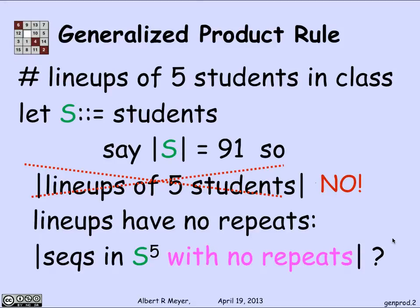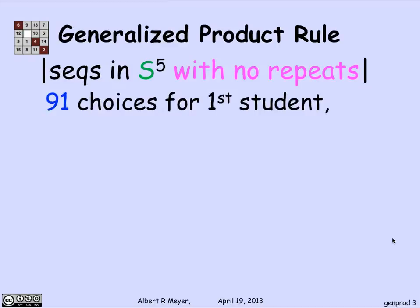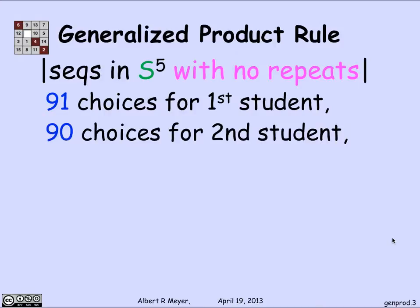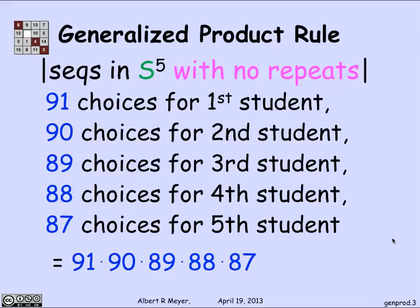And the generalized product rule tells you quite straightforwardly how to count those. Namely, there are 91 ways to choose the first student among the 91. And whichever first student you've chosen, that leaves 90 other students that you could choose to be second. And once you've chosen the first two, that leaves 89 students you could choose for the third, and 88 for the fourth, and 87 for the fifth.